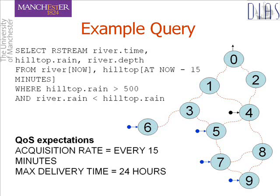The goal of this query is to obtain, every 15 minutes, timestamped readings of the current rainfall and river depth, and the rainfall at the hilltop 15 minutes previously, in cases where the rain at the hilltop is above a certain threshold. We are only interested in cases where it is currently raining less at the river than it was at the hilltop 15 minutes ago, to reduce the likelihood that any increase in river depth was caused by rain on the river itself.